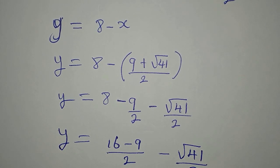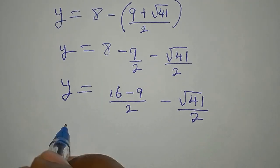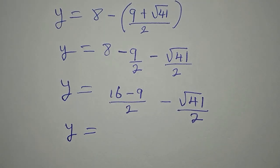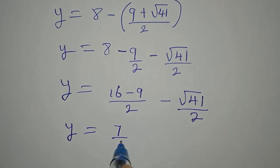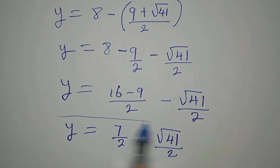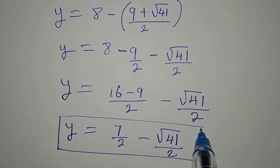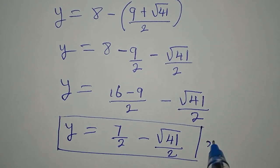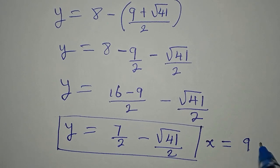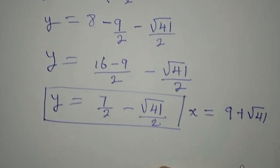Now our y is 16 minus 9 is 7. So we'll write 7 over 2 minus square root of 41 over 2. This is the value of y when x is equal to 9 plus square root of 41 over 2.